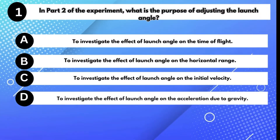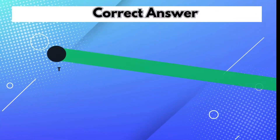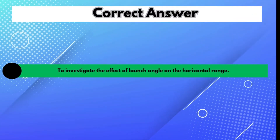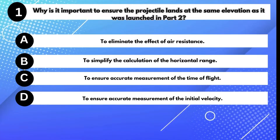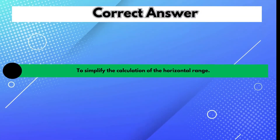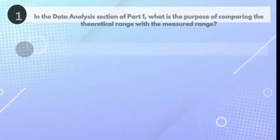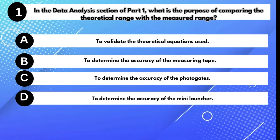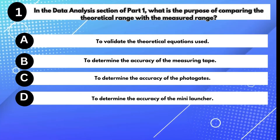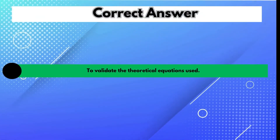In part 2 of the experiment, what is the purpose of adjusting the launch angle? Answer B: To investigate the effect of launch angle on the horizontal range. Why is it important to ensure the projectile lands at the same elevation as it was launched? Answer B: To simplify the calculation of the horizontal range. In the data analysis section of part 1, what is the purpose of comparing the theoretical range with the measured range? Answer A: To validate the theoretical equations used.